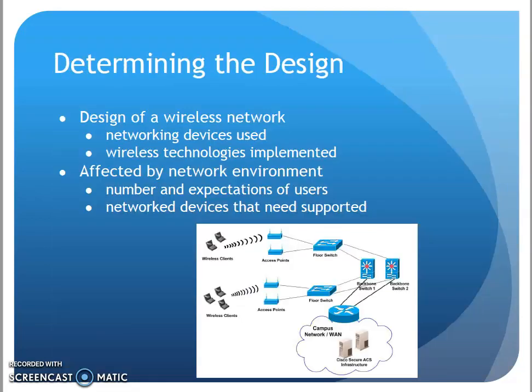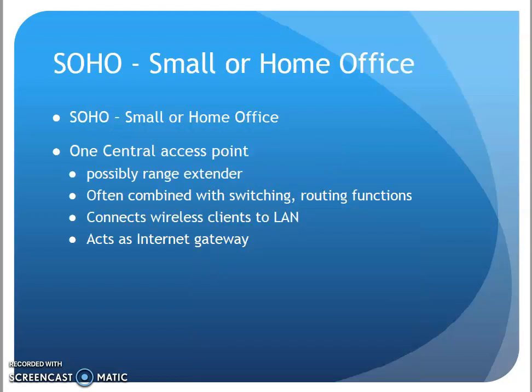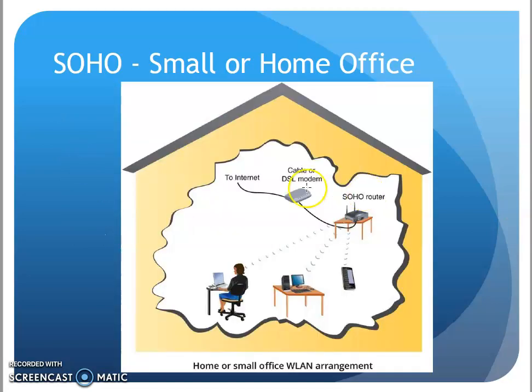Determining the design of a network has a couple of factors: the devices being used, the technologies we're implementing, the number of users, and the number of devices that need to be supported are all going to factor into the design of our wireless network. The first scenario we start with is the smaller home office. This is typically what we have in our house, or maybe in small places like a church office, where you just have a few devices that need to be connected. One access point might have everything included in it, like what you have at home — it serves as the gateway to the ISP, provides wireless connectivity, and has routing and switching functions built in.